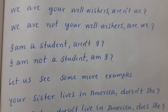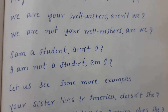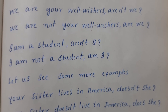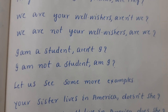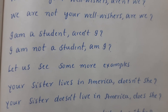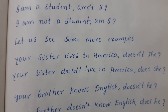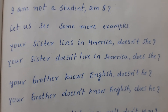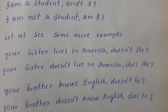Let's see more examples. 'Your sister lives in America, doesn't she?' — positive statement, so negative tag using 'doesn't' with he/she/it. 'Your sister doesn't live in America, does she?' — negative statement, positive tag. 'Your brother knows English, doesn't he?' — positive statement, negative tag. 'Your brother doesn't know English, does he?' — negative statement, positive tag.